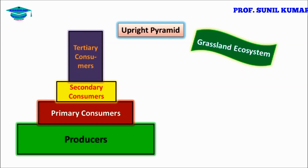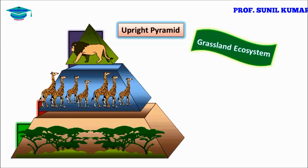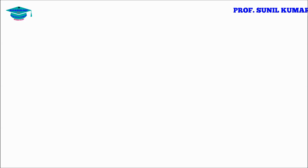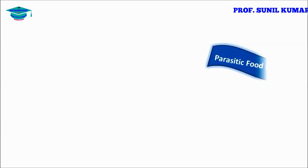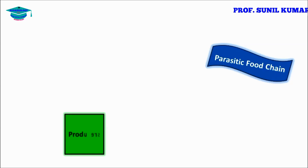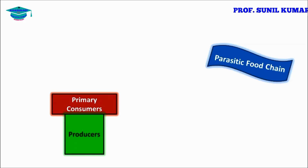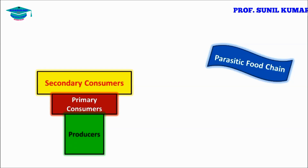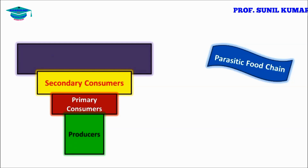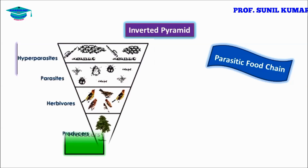The grassland pyramid of number is upright. When you talk about the parasitic food chain, it will have least producers and the maximum will be tertiary consumers, meaning the pyramid in case of parasitic food chain is inverted — where the producers are less and the hyper-parasites are more in number.